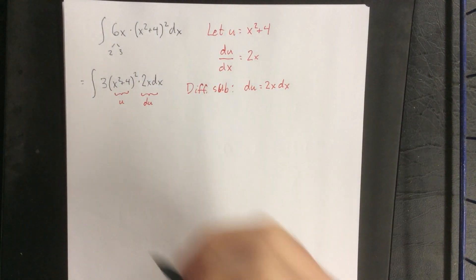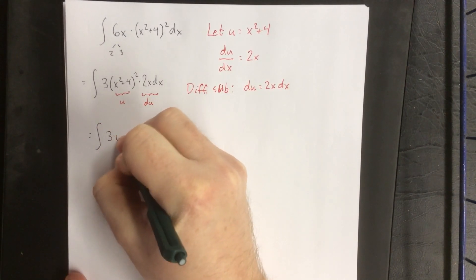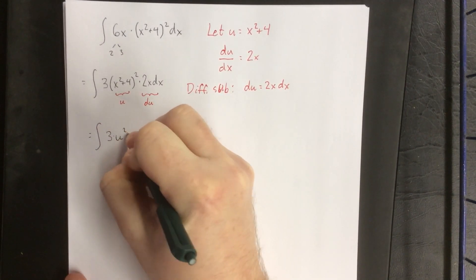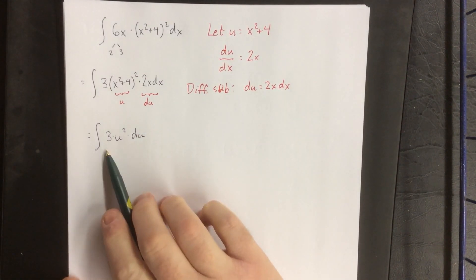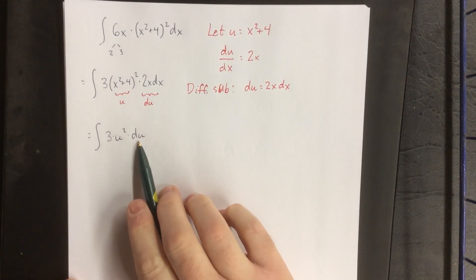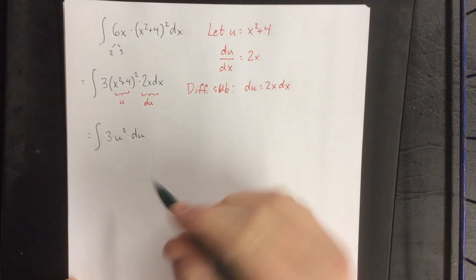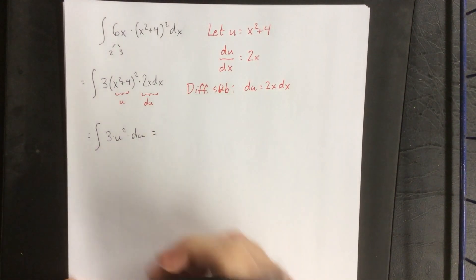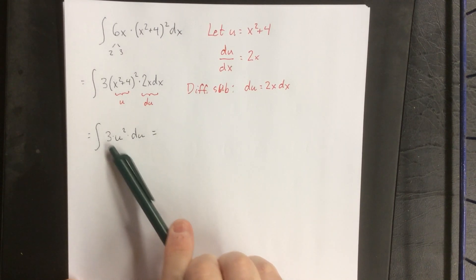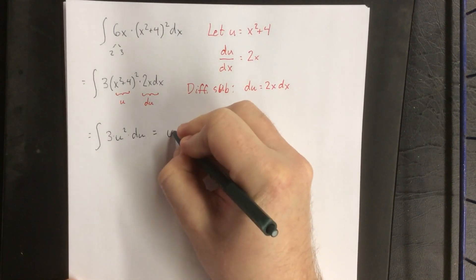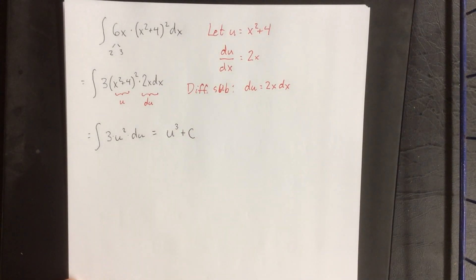After these substitutions are applied, the new integral we are looking at is the integral of 3 times u squared du. This is asking us — treating u as our variable — to find the antiderivative of 3 times u squared. We can find that using the power rule. The antiderivative of 3 times u squared, treating u as our variable, is u cubed plus a constant of integration.